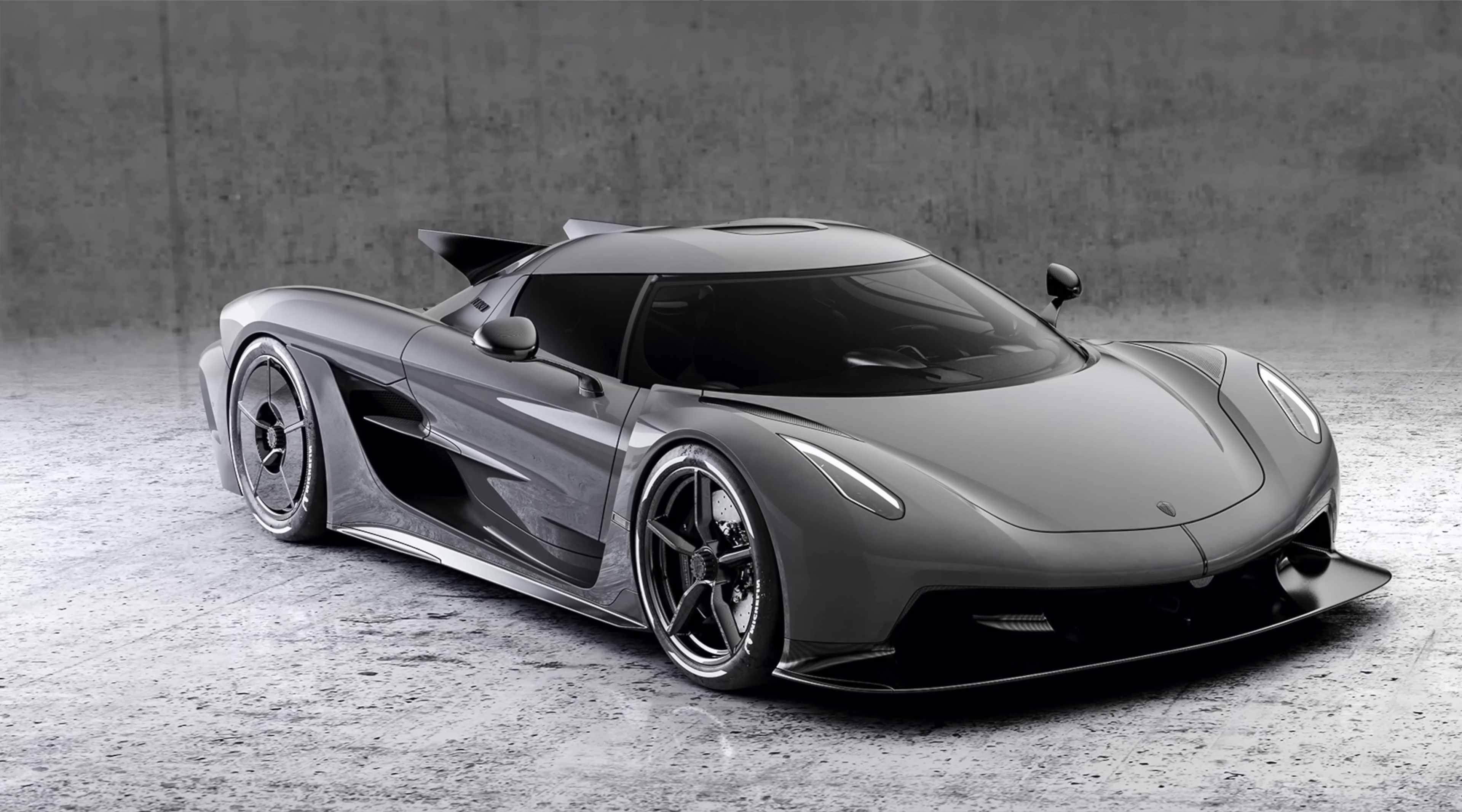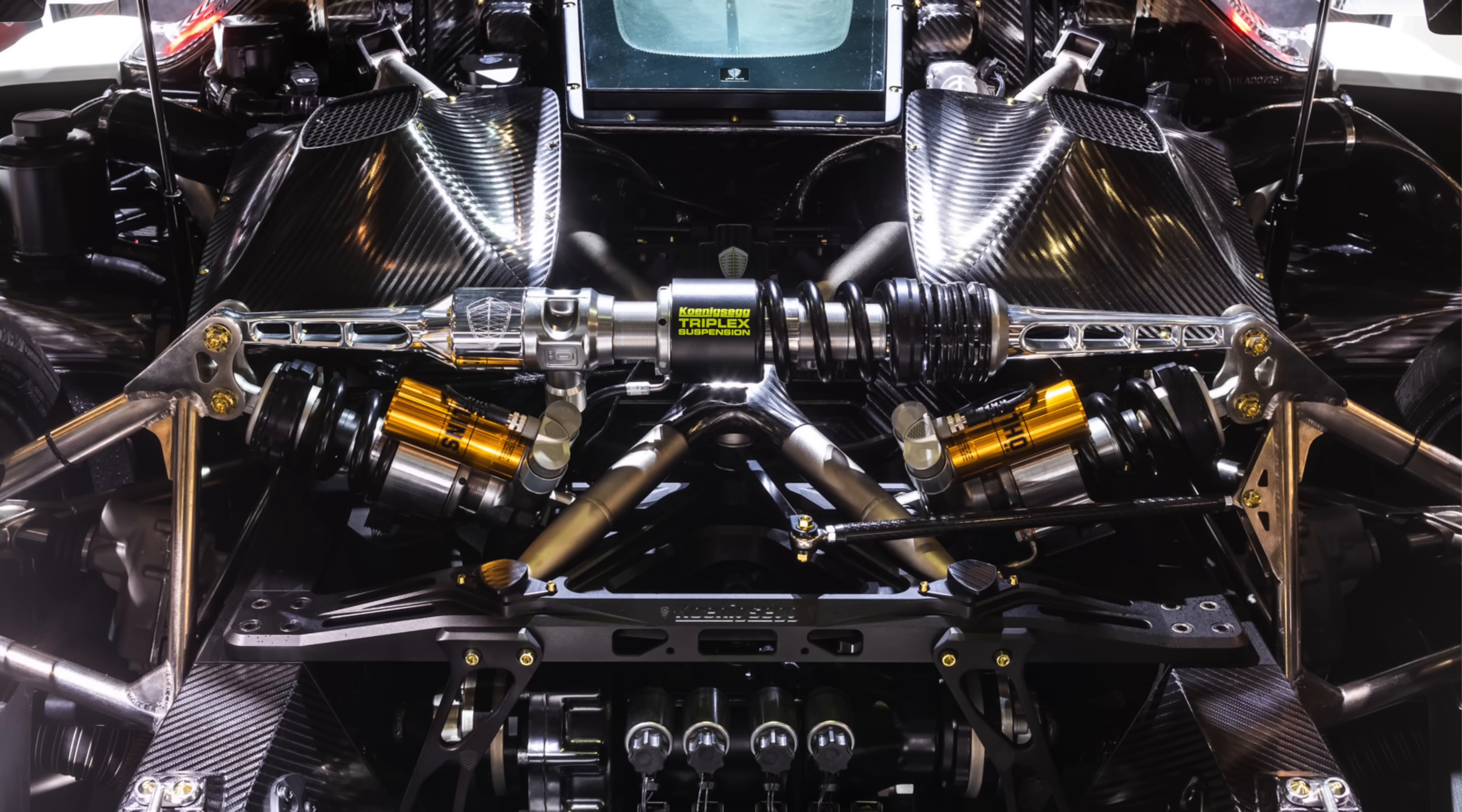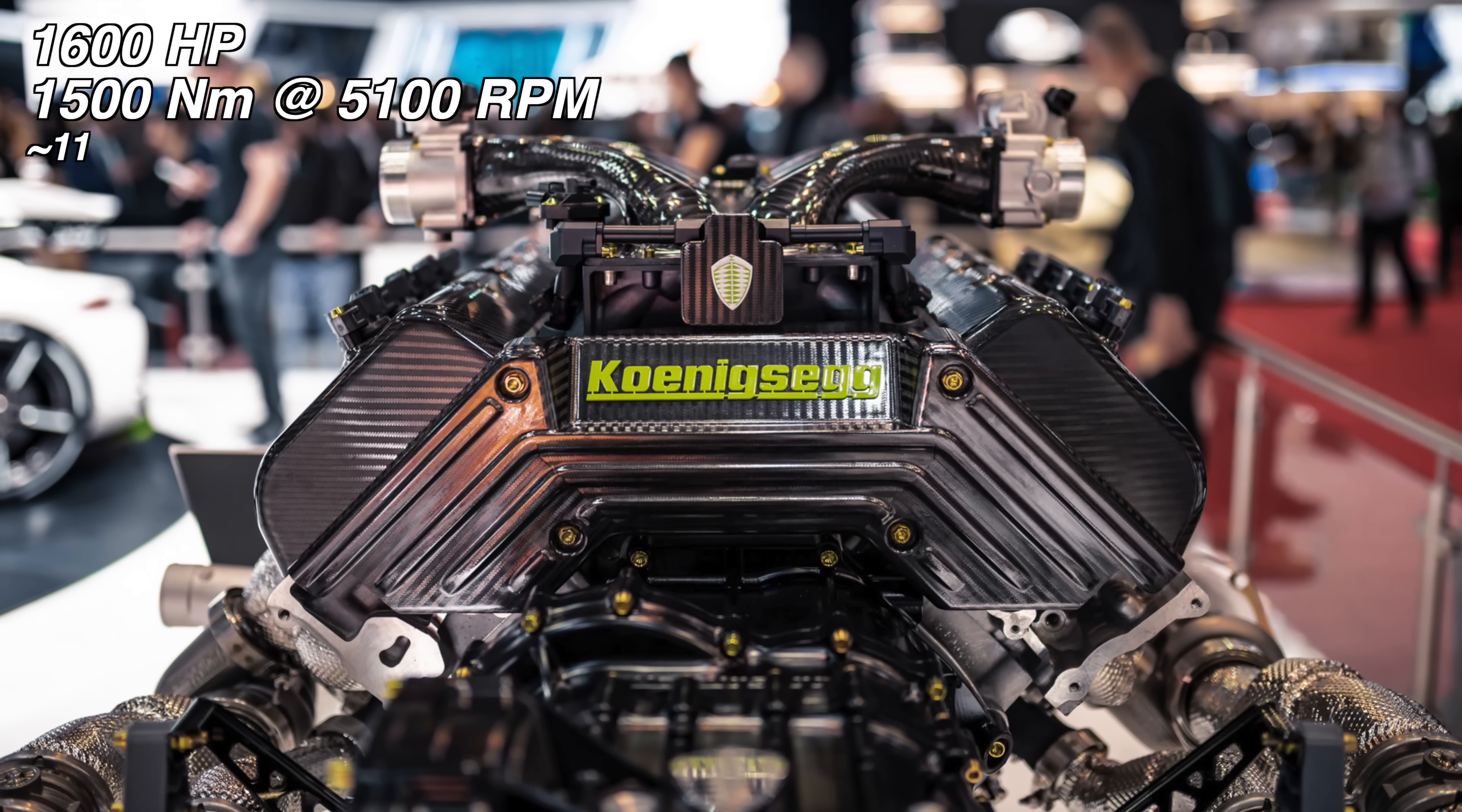So the first thing we need to talk about is how much power does this thing make. There are two versions of the Koenigsegg Jesko and they both have the same powertrain - a 5-liter twin-turbocharged V8, which when running on E85 fuel with 2.2 bar of boost pressure makes 1600 horsepower and revs all the way to 8500 rpm.